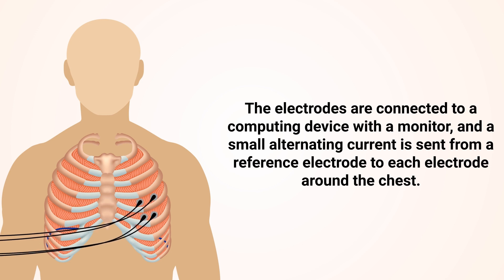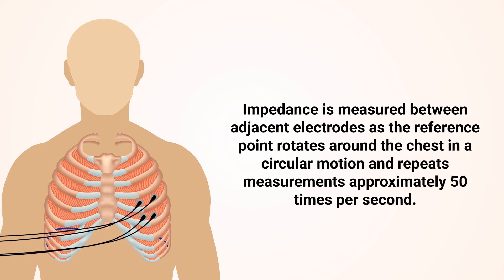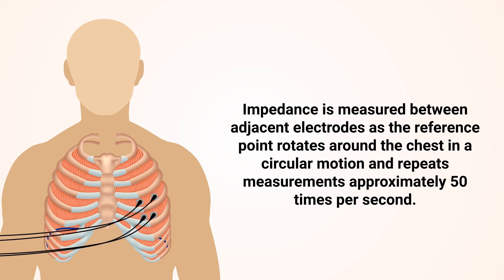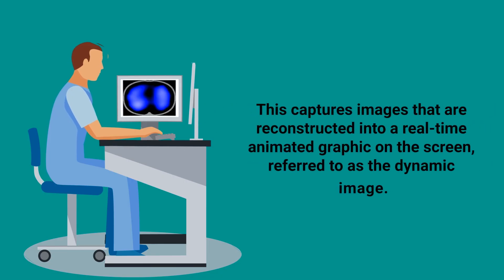Impedance is measured between adjacent electrodes as the reference point rotates around the chest in a circular motion and repeats measurements approximately 50 times per second. This captures images that are reconstructed into a real-time animated graphic on the screen.